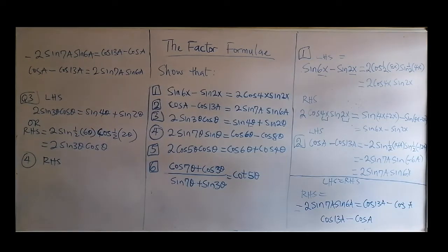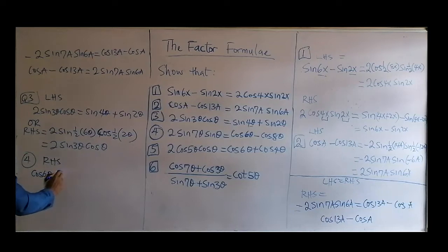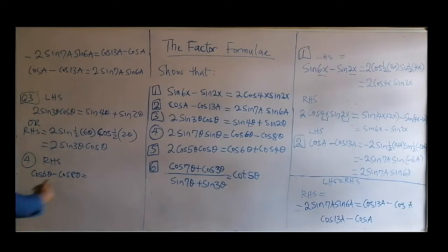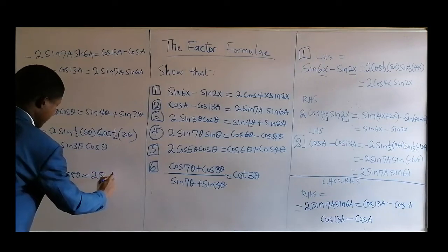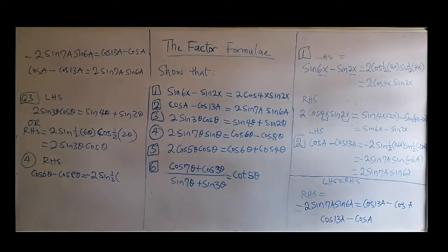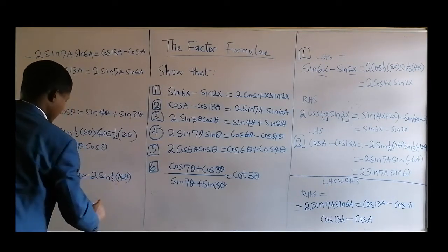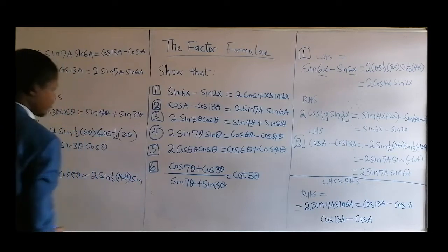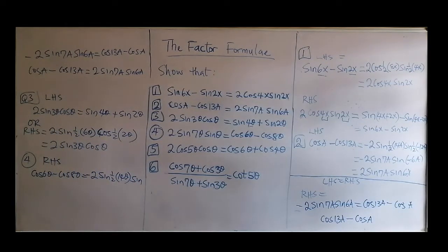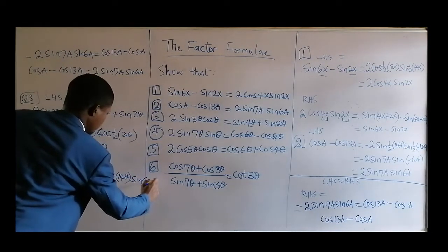On the right-hand side we have cos(6θ) minus cos(8θ). For the subtraction of cosines, that becomes minus 2sine of half of (a plus b) in the bracket — that's (6θ + 8θ) = 14θ — times sine of half of the subtraction (6θ minus 8θ) = minus 2θ.